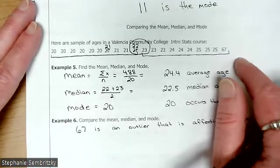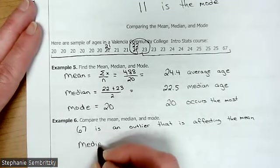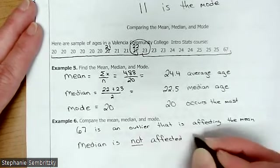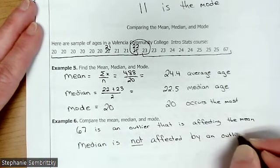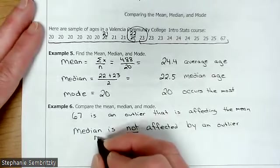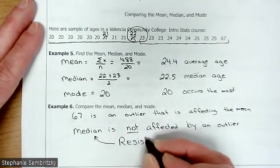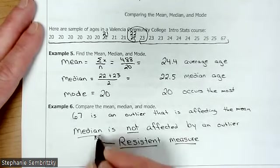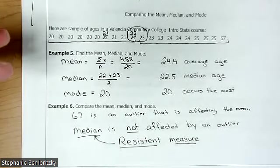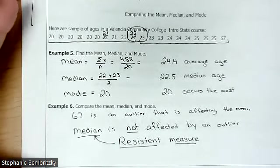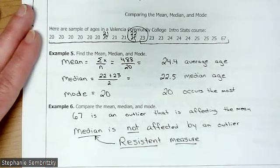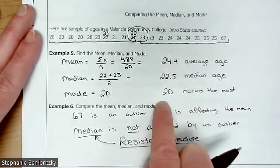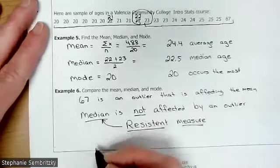Now notice, is the median affected by having a large number at the end? No. The median is not affected by an outlier. That's really important. We're going to come back to that a lot. Median is not affected by an outlier. So the median is called a resistant measure. Okay, so it's resistant to outliers. Outliers do not pull it away. Now, which one is going to be the best one to describe the center of this data? The mean was being affected by the 67-year-old. That's really not good. Is 20 good? No. So the median is the best description of center.